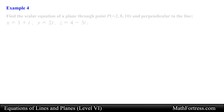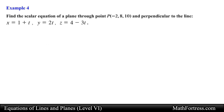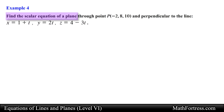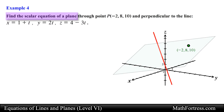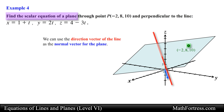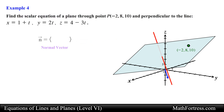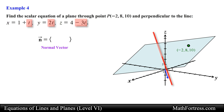Let's take a look at the final example. Find the scalar equation of a plane through point P and perpendicular to the line. In this problem we are given the coordinates of point P and the parametric equations of a line. We are asked to find the scalar equation of a plane that passes through point P and is perpendicular to the line. Since the line is perpendicular to the plane, we can use the direction vector of the line as the normal vector for the plane. We determine the components of the direction vector by taking the coefficients of the parameter t in the parametric equations. This direction vector will also serve as the normal vector for the plane.